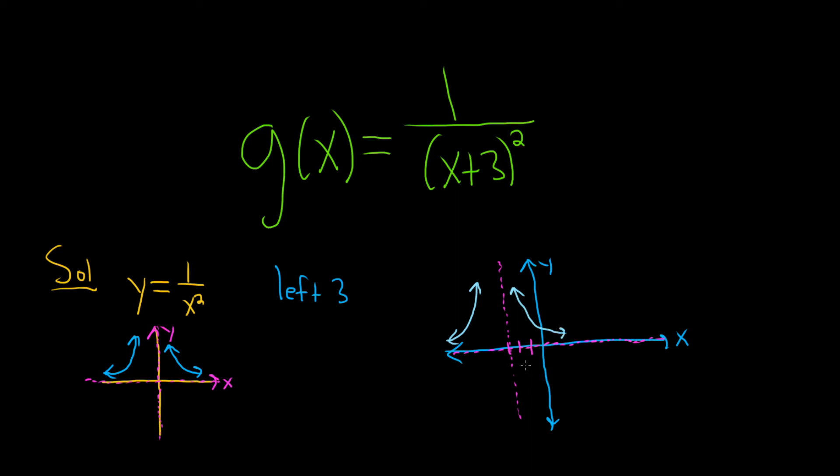And that's it. So if instead, let's say it was 1 over x minus 3 squared. In this case, it would be right 3. Right, you would go the other way. It's always backwards when you add and subtract to the x.